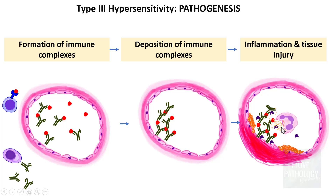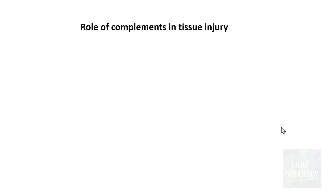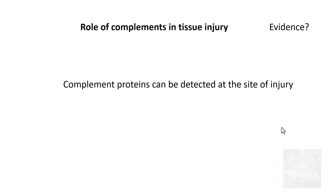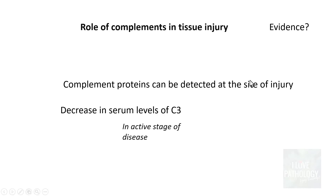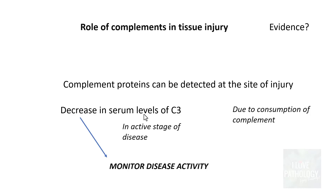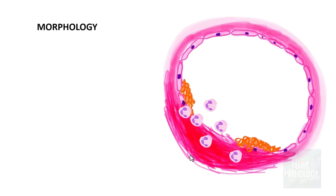What is the role of complement in tissue injury? Evidence includes the detection of complement proteins at the site of injury. Additionally, if you measure serum levels of C3, they will be decreased during the active stage of disease, due to consumption of complement. This decrease in serum C3 can also be used to monitor disease activity.